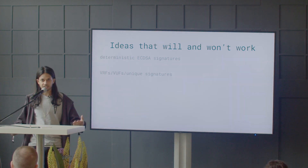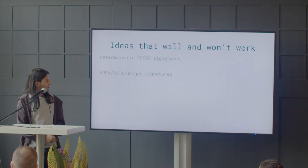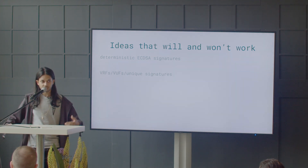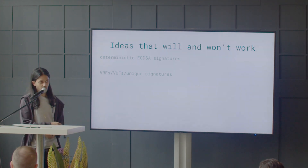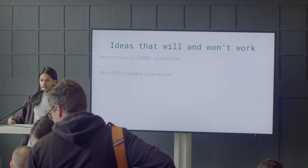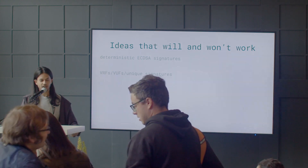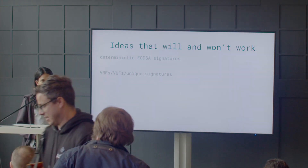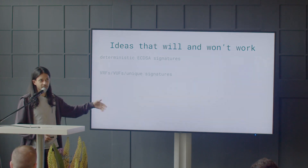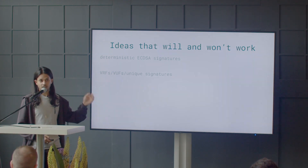So it's actually not possible to verify this deterministic ECDSA signature's determinism without the private key, and that breaks the third property that we wanted — we don't want the user to have to input their private key. There is this idea in the literature of VRFs, VUFs, or deterministic signatures, and you can imagine that maybe this would have the properties that we want. But almost all of the VUFs in the literature aren't compatible with ECDSA as implemented on Ethereum and Bitcoin, and the curves they're on are different than secp256k1.